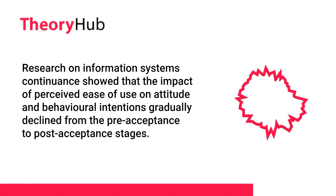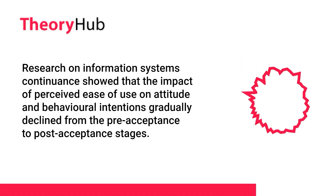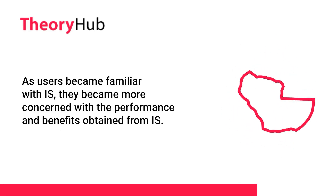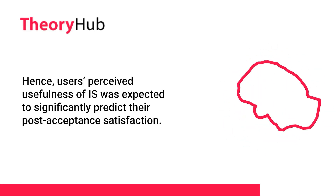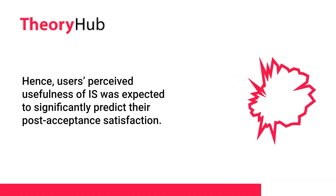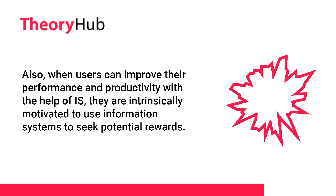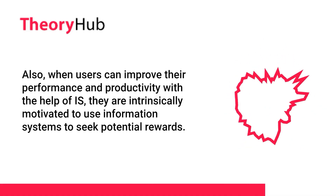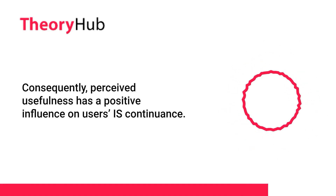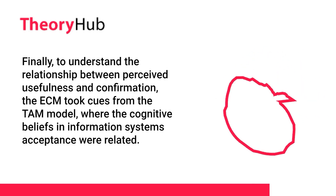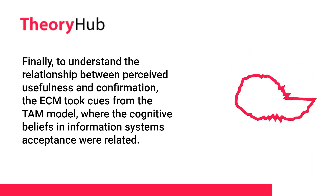Research on IS continuance showed that the impact of perceived ease of use on attitude and behavioral intentions gradually declined from the pre-acceptance to post-acceptance stages. As users became familiar with IS, they became more concerned with the performance and benefits obtained from IS. Hence, users' perceived usefulness of IS was expected to significantly predict their post-acceptance satisfaction. When users can improve their performance and productivity with the help of IS, they are intrinsically motivated to use information systems to seek potential rewards. Consequently, perceived usefulness has a positive influence on users' IS continuance.